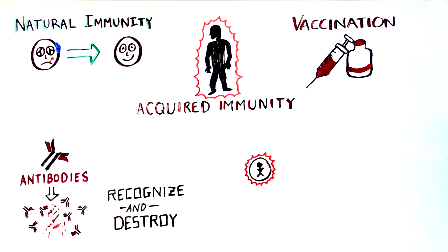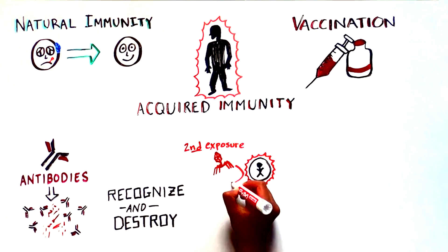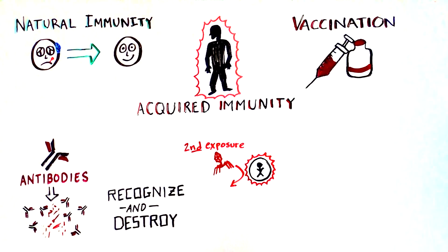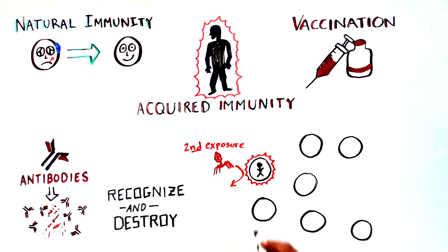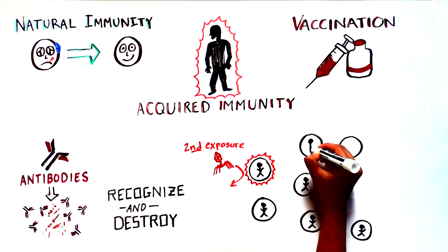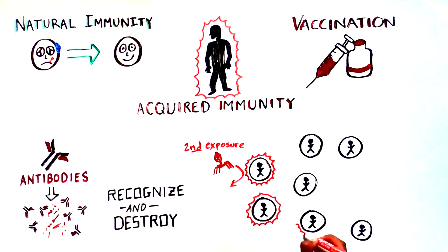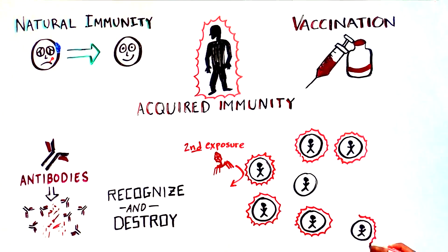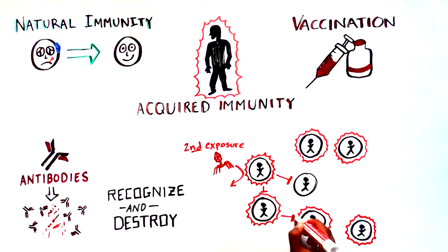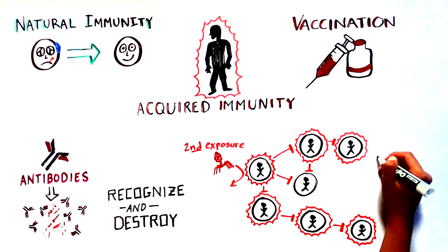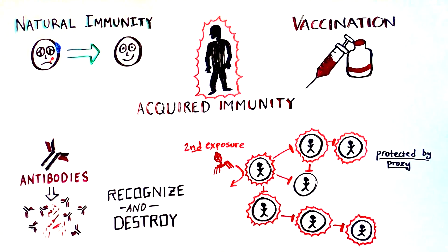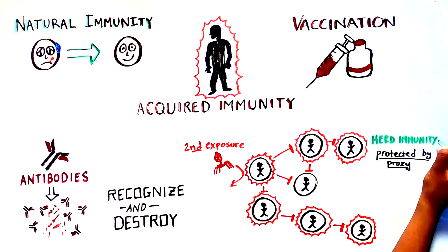For infectious diseases, this not only protects you from getting sick when you're exposed to the pathogen for a second time, but can also prevent you from spreading the disease to other people. This is a great way to prevent the spread of disease because the more people in a population who become immune, the less that pathogen is able to jump from person to person, essentially breaking the cycle of transmission. When enough people in a population become immune, the rest of the population is protected by proxy, establishing herd immunity.